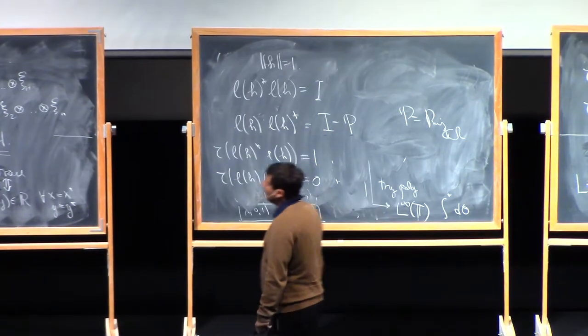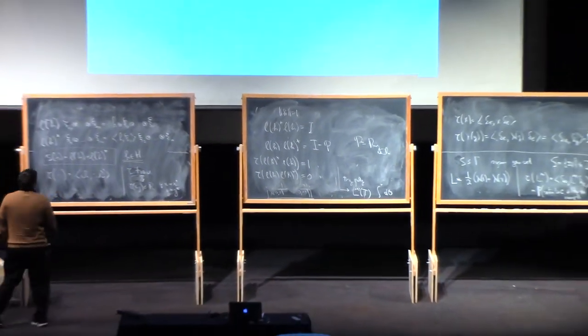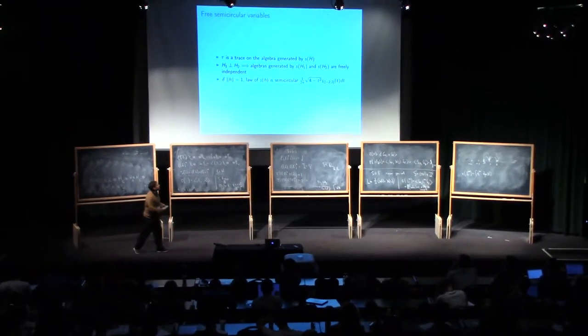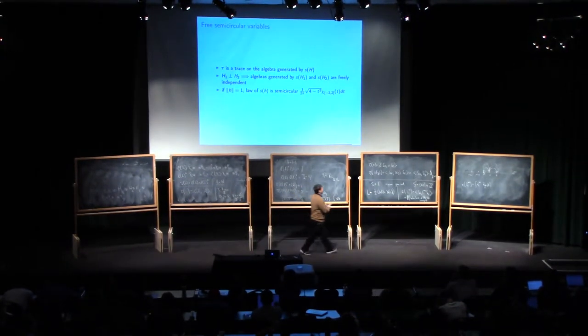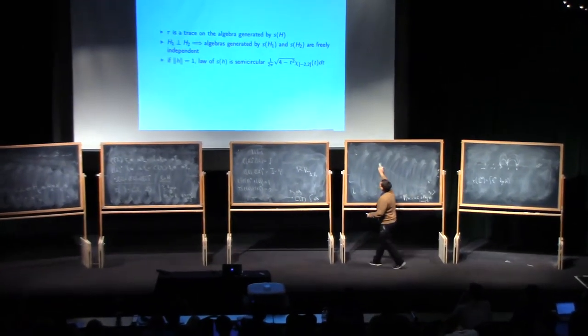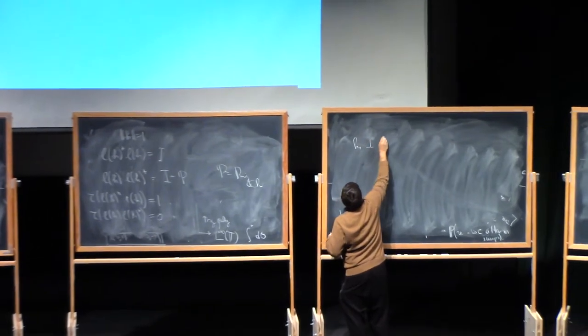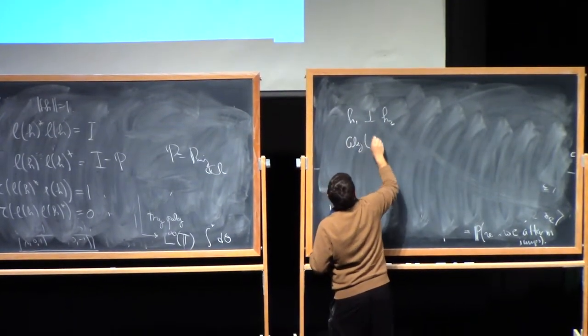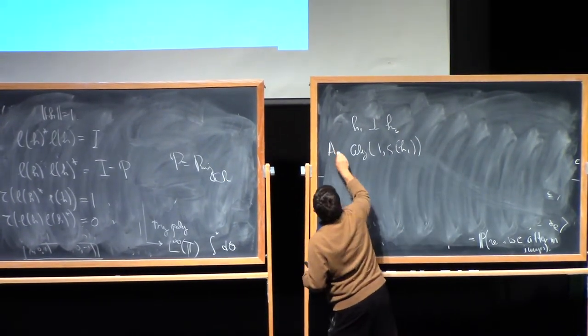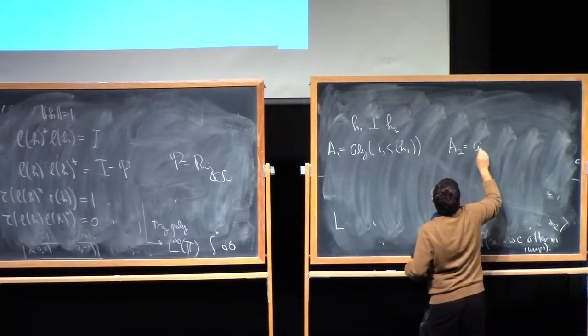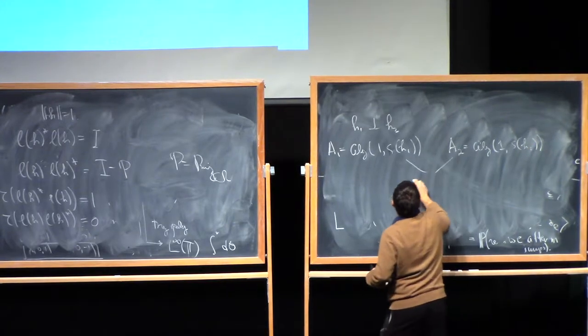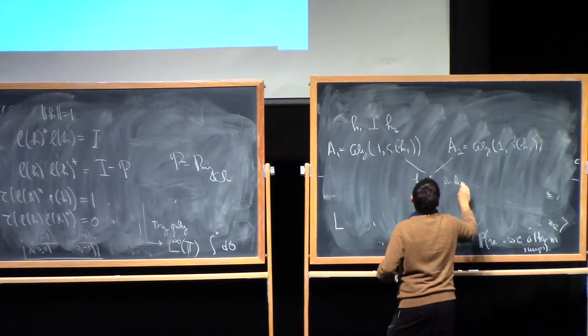The other thing that you can check, and this is done in the notes, is that if you start with perpendicular Hilbert spaces, you get things which are freely independent. So, if I start with vectors h1, hn, let me just do two vectors for simplicity. Suppose that I have h1 is perpendicular to h2, and I look at the algebra generated by s of h1, and the algebra generated by a1, and a2, which is the algebra generated by s of h2, then these are freely independent.